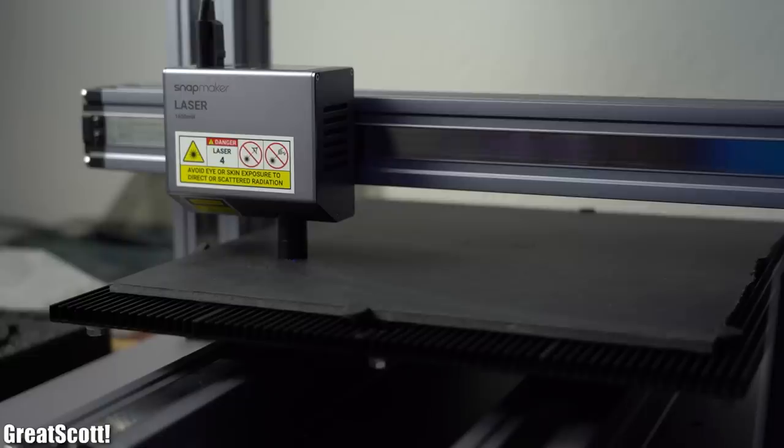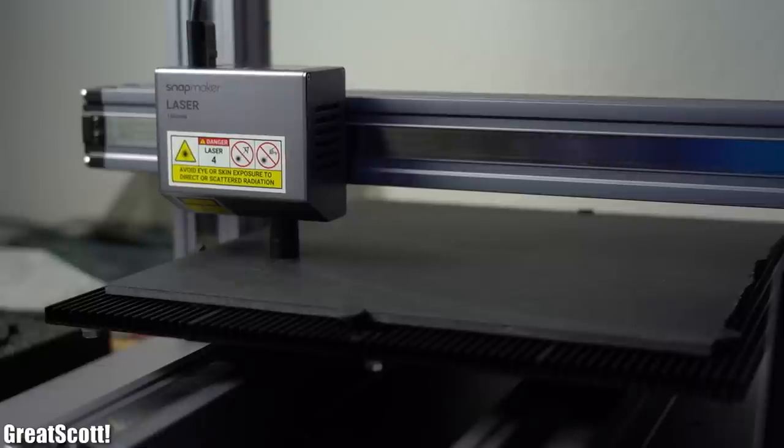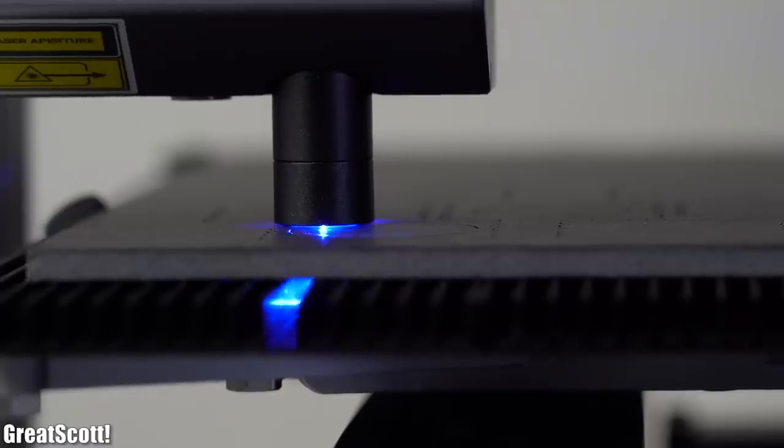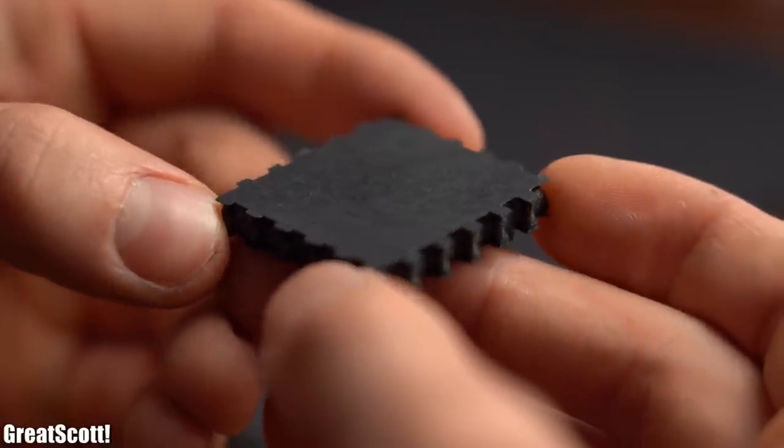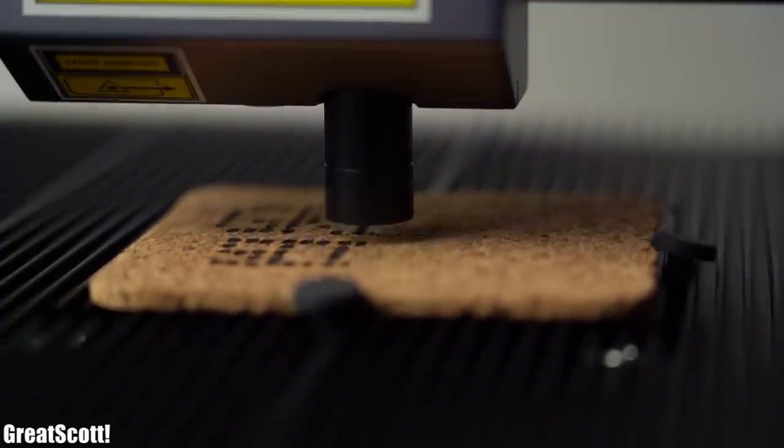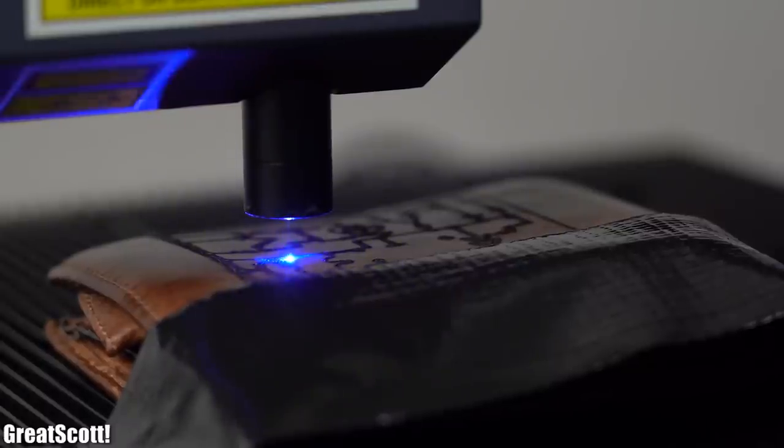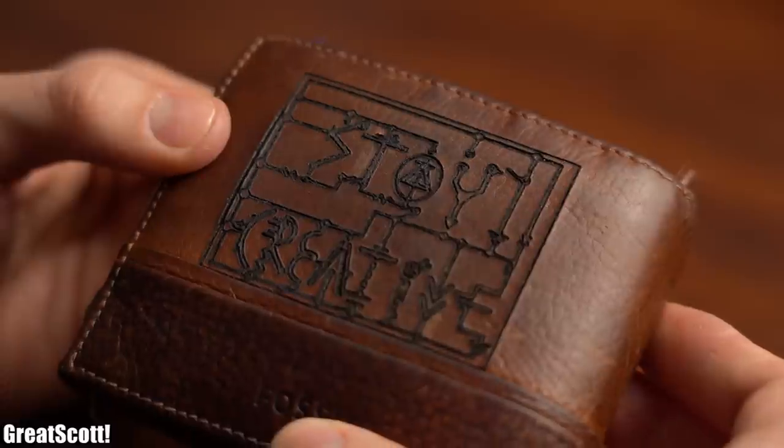After around 1.5 hours the machine was done but I should have done more passes to completely cut through the material which is why I repeated this test with some foam board. This time the laser cut through it like butter and its precision was also pretty great. Last but not least I also tinkered around with a bit of laser engraving which turned out fine but I will certainly have to learn what power levels to use with which material.